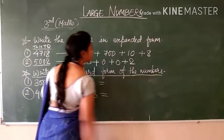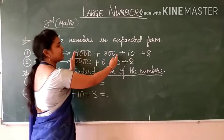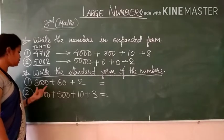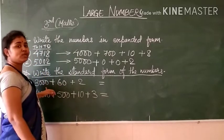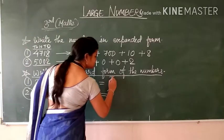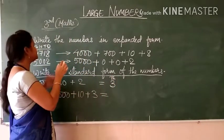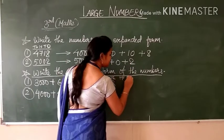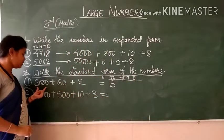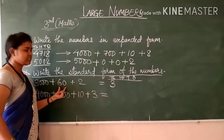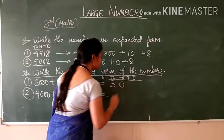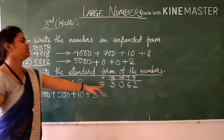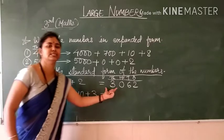Now I am going to tell you how to write the standard form of the numbers. The standard form and expanded form are opposite. If the expanded form is given, how do you write the standard form? See the two examples: 3,000 + 60 + 2. Put the place headings: thousands, hundreds, tens, and ones. 3 in the thousands place — no hundreds so write 0 — 60 means 6 in the tens place and 2 in the ones place. So this is 3,062.